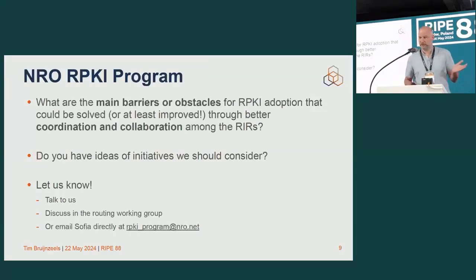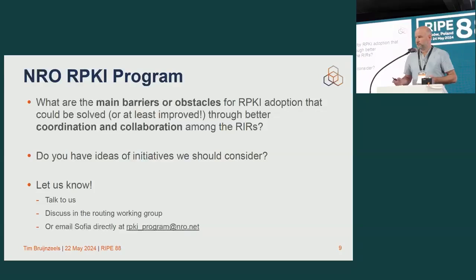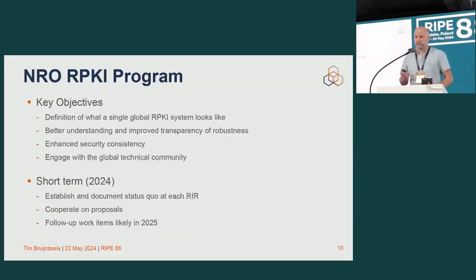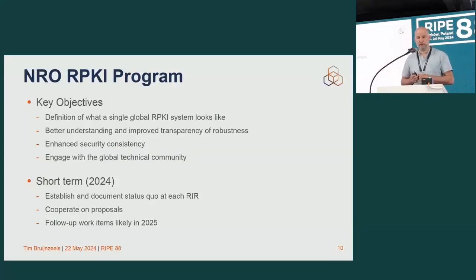What are your main obstacles and barriers that should be solved by the RIRs together? If you have ideas about this, please talk to us — you can talk to Sofia. We are very happy to know about it. For the moment, we did do our own goal setting and key objectives. They're quite high level, and that's just the stage where we are. We hope to make them more tangible in the time to come.